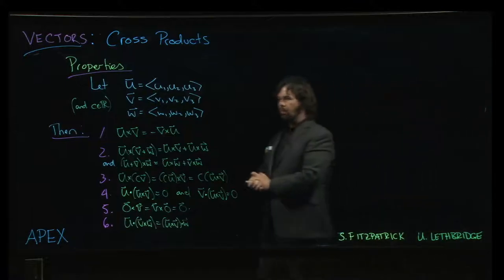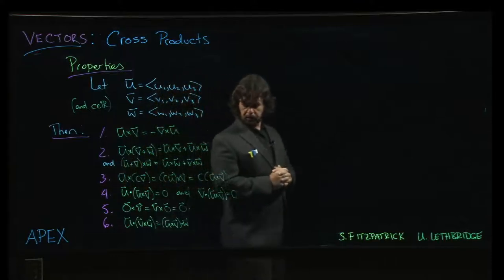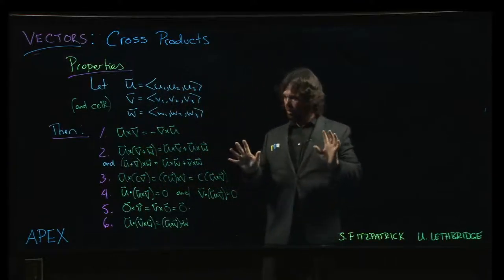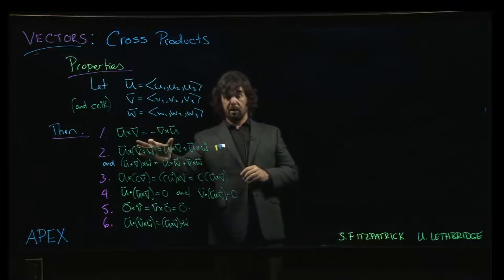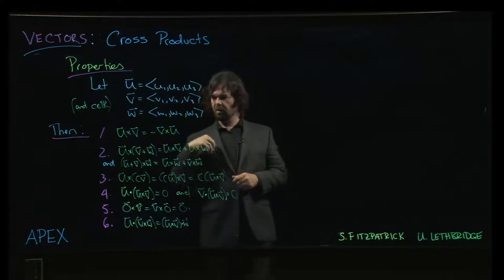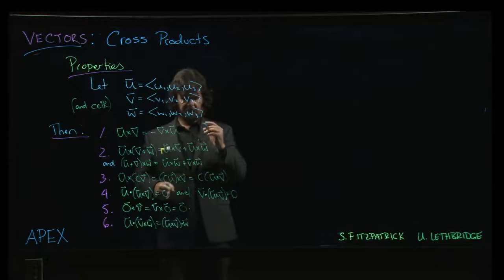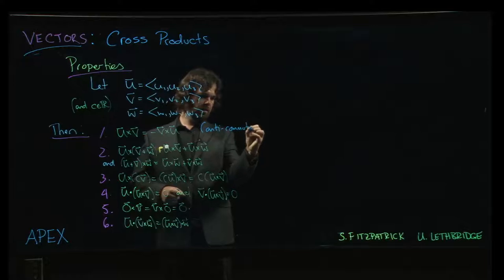Alright, so next we're going to look at some properties of the cross product. I've written them all down ahead of time here. Some of these we've sort of already seen. In the last example we saw that if you change the order in the cross product you get a minus sign. We sometimes refer to this as saying that the cross product is anti-commutative.